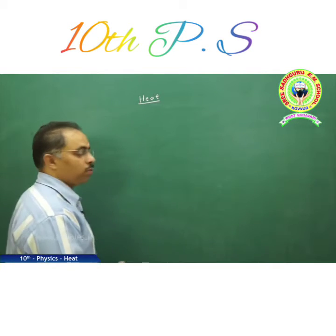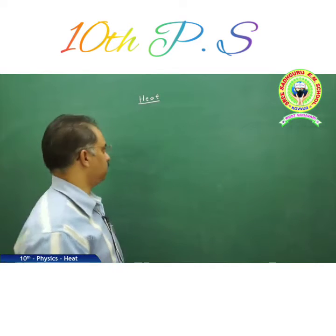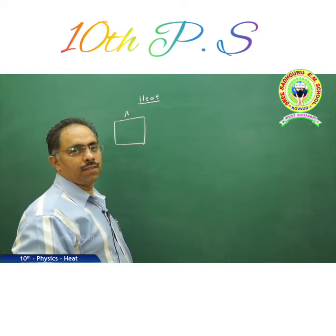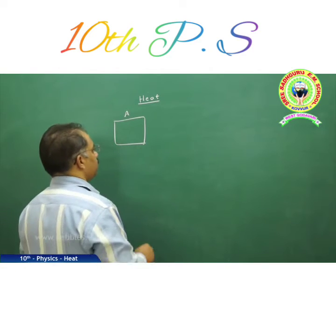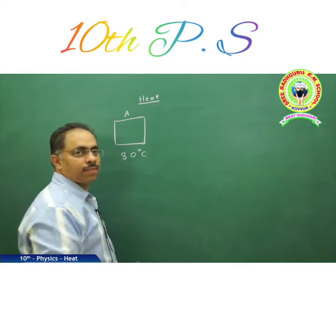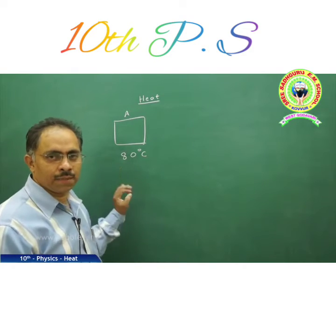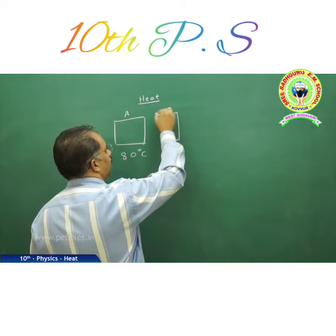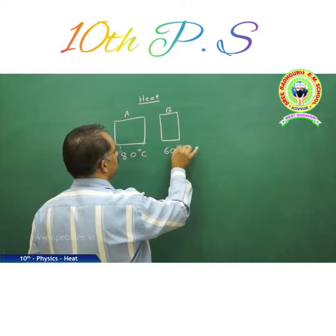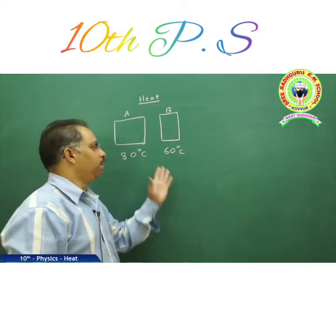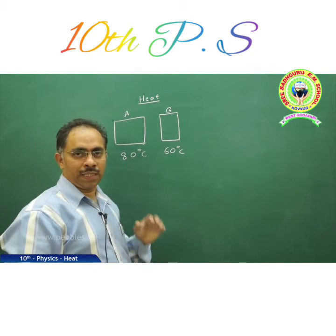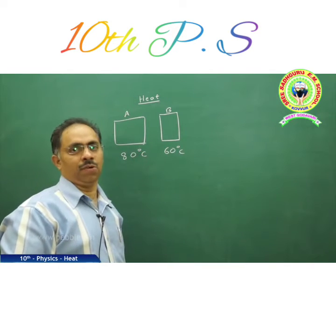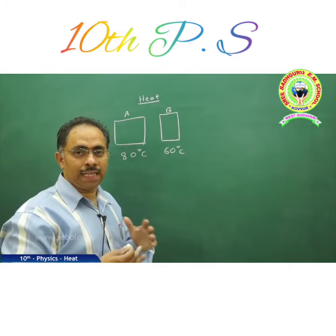Heat flows as long as both bodies acquire the same temperature. Let us say body A is at 80 degrees Celsius and another identical body B is at 60 degrees Celsius. It is clear that body B has a lower temperature, so if we keep these two bodies in contact, heat will flow from one to the other as long as they acquire the same temperature.